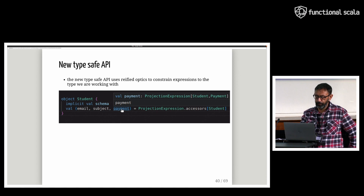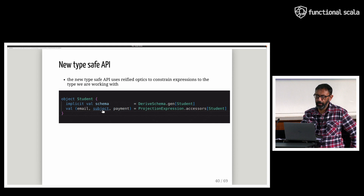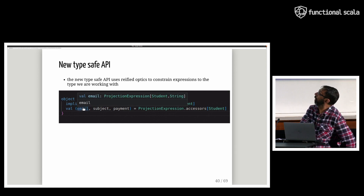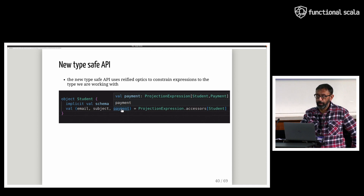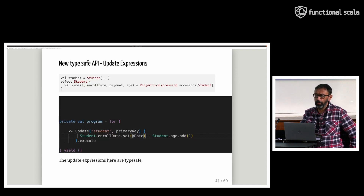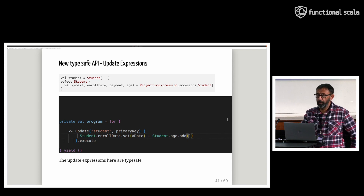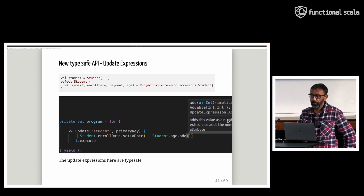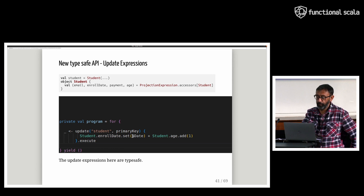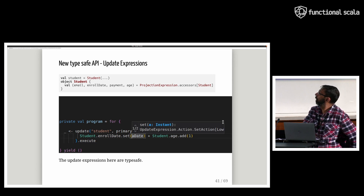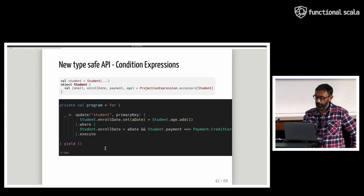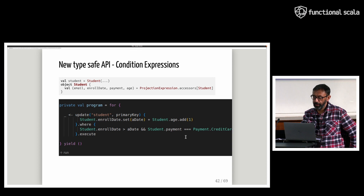The new TypeSafe API uses reified optics to constrain expressions to the type we are working with. In the IDE, when we hover over the field, we can see the from-type is a student and the to-type is the type of the field in the student case class. This is a huge breakthrough. We use projection expressions defined above to create our update actions, which are now constrained to the student type. When we do parameter info inside the IDE, we see that both actions are constrained to the field types in the case class. Similarly, condition expressions are now constrained to the student type, and comparison values are constrained to the case class field type — this even includes sum types, like the payment field.